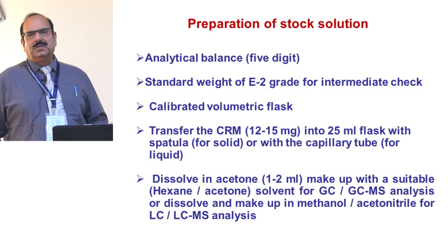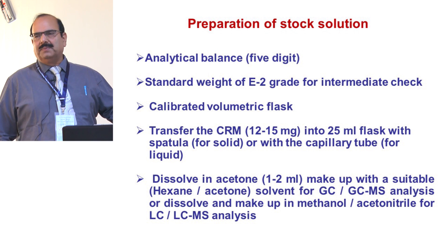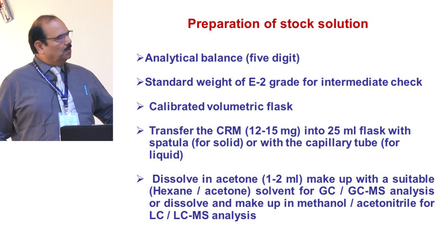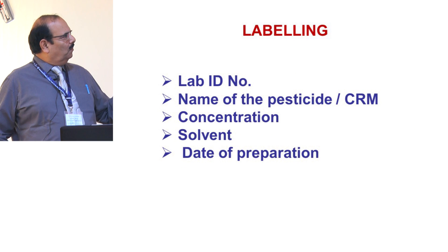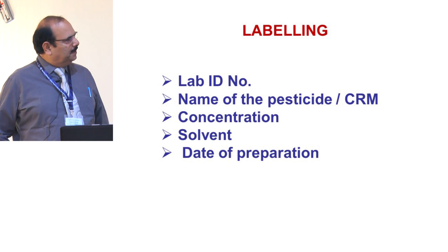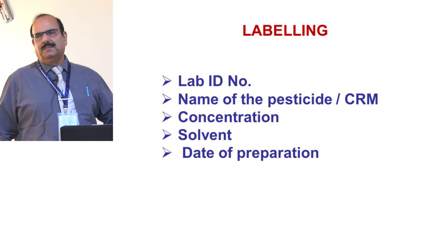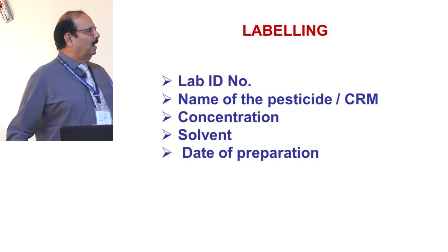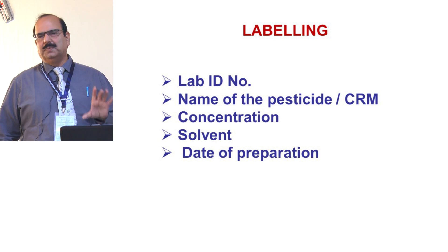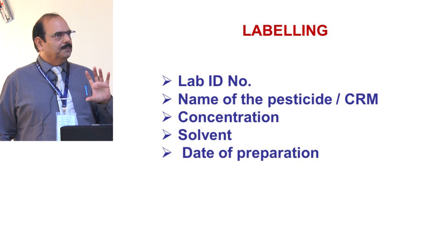For labeling the stock solution, use the same lab ID number given to the reference standard. For example, if number 20 is assigned to malathion, the stock solution will also be labeled 20, maintaining traceability to the intermediate and working solutions. The label should include: name of the pesticide, concentration in ppm or micrograms per gram, solvent used for preparation — hexane-acetone, toluene, acetonitrile, or methanol — and the date of preparation.